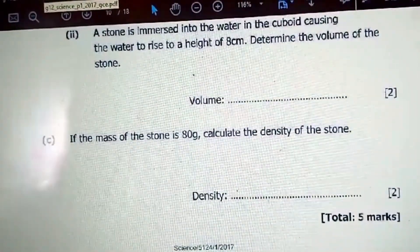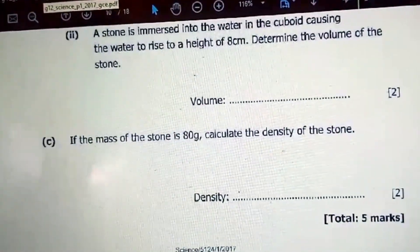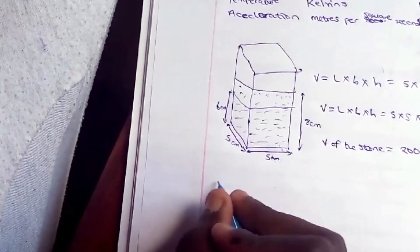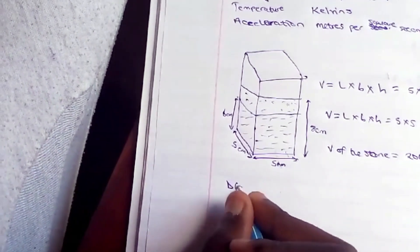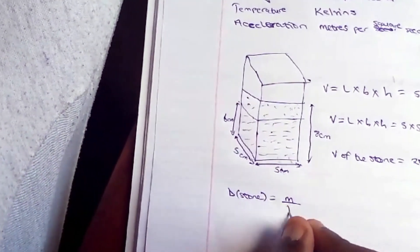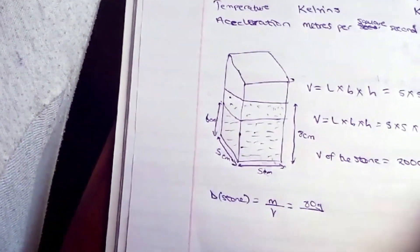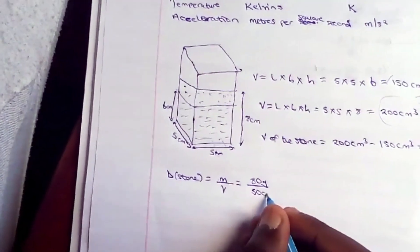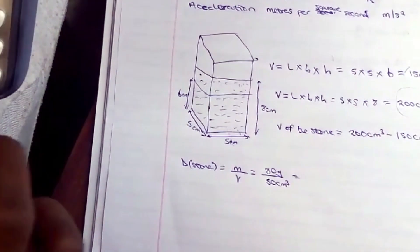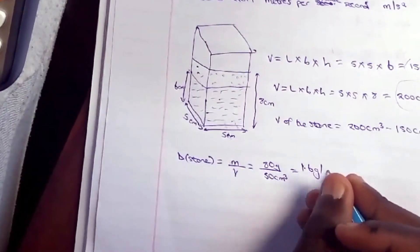If the mass of the stone is 80 grams, we can calculate its density. Density equals mass over volume: 80 grams divided by 50 cubic centimeters equals 1.6 grams per cubic centimeter. That is the final answer.